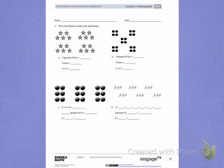This is Module 1, Lesson 1. Today's objective is to understand equal groups as multiplication.